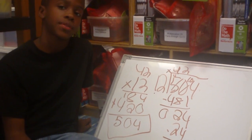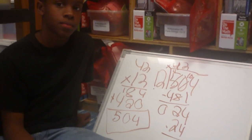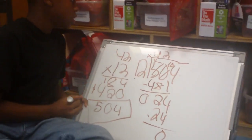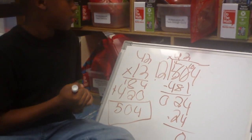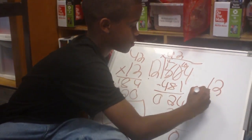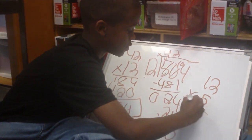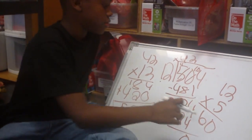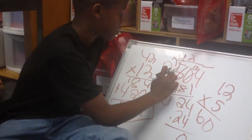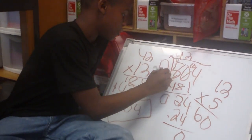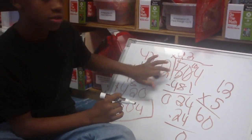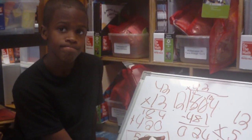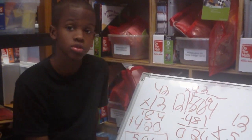Can you explain to me how 504 was divided into 12 groups based on what you did there? Well, if you see 12 times 5, it would be 60. But is that number 5? It's right here. How do you know it's 5? No, 12 can't go into 5. Is that number 5? What place is it in? 100 times.